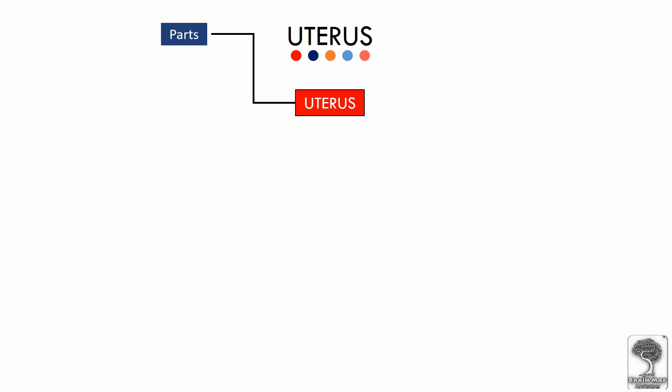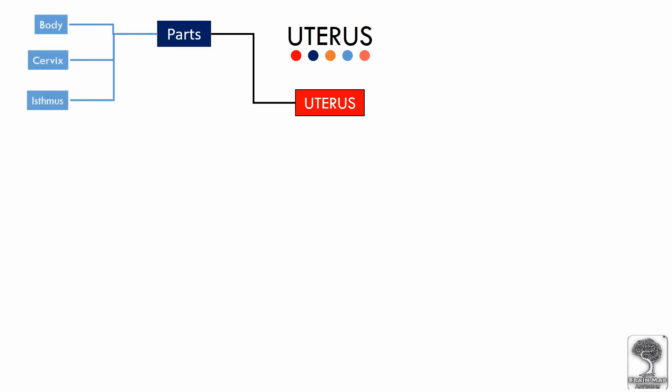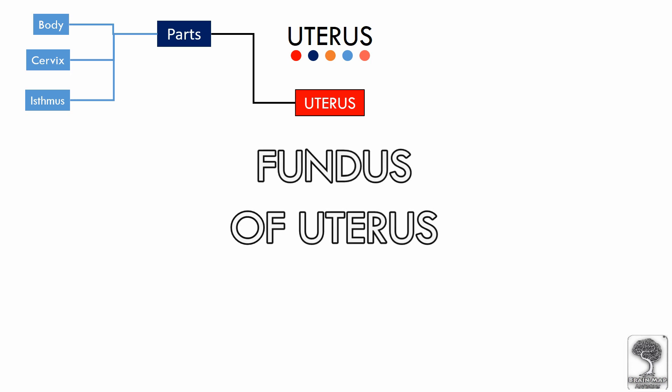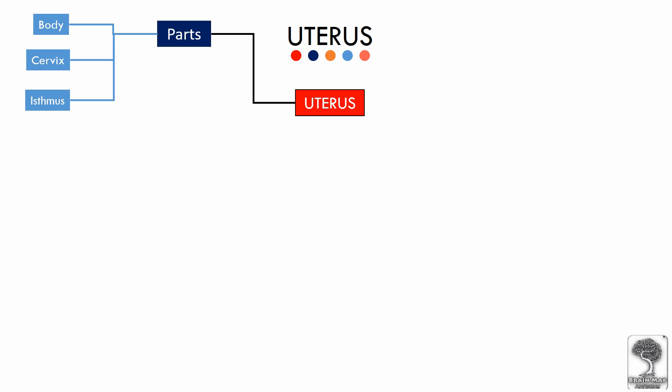First, we will see the anatomical parts of the hollow, thick-walled, muscular organ. The large upper two-third of the pear-shaped uterus is called the body. The part of the body above the openings of the uterine tube at the cornue is called the fundus of the uterus. The smaller cylindrical lower one-third part of the uterus is called the cervix.